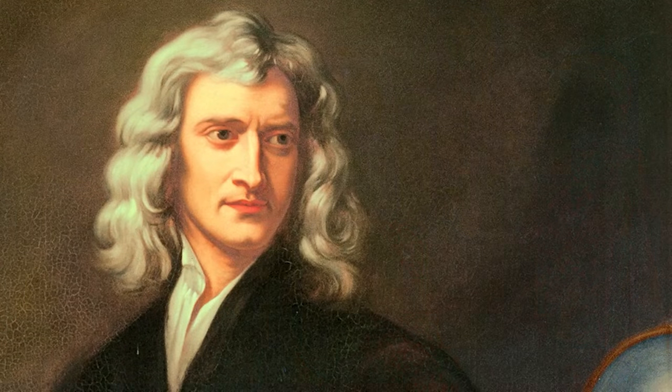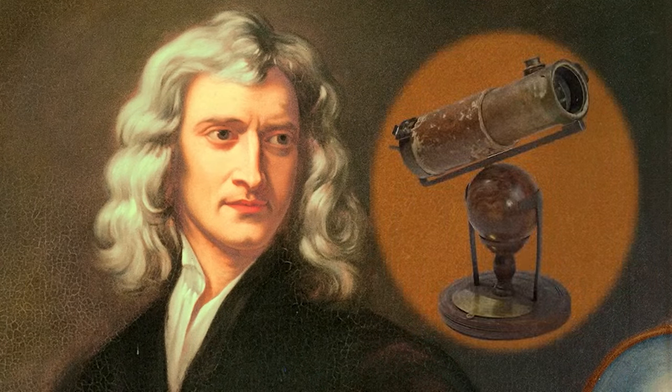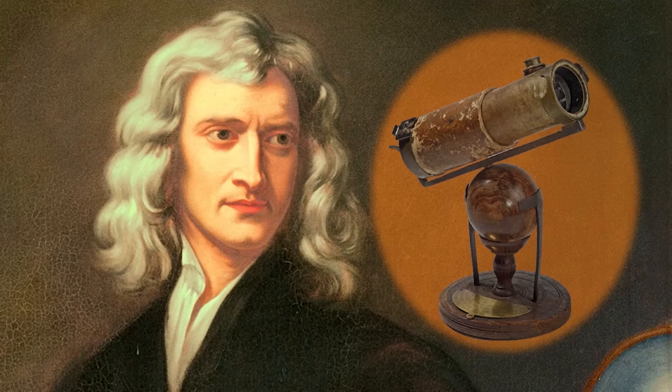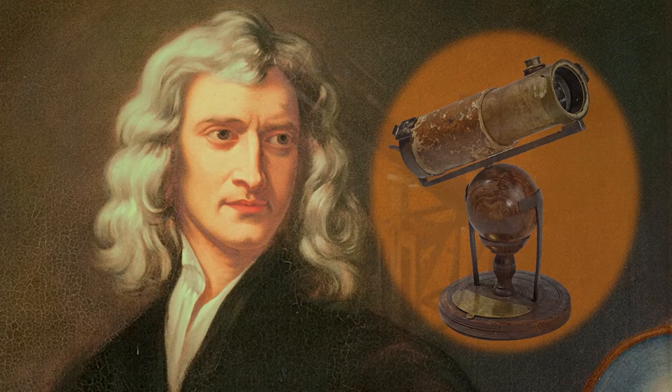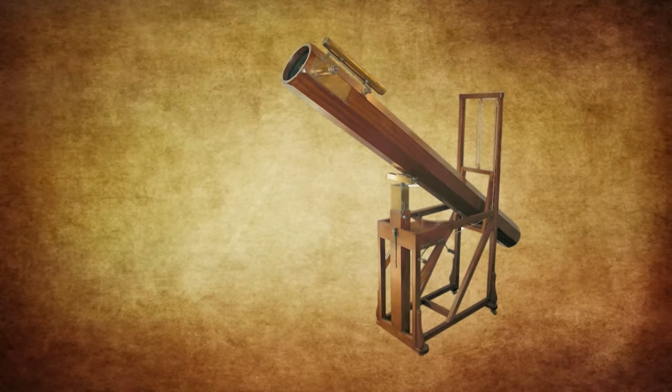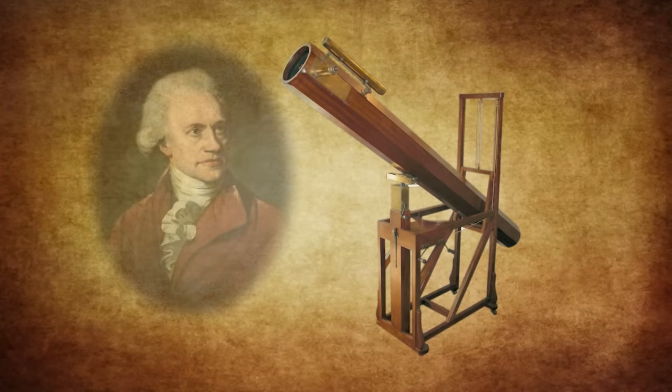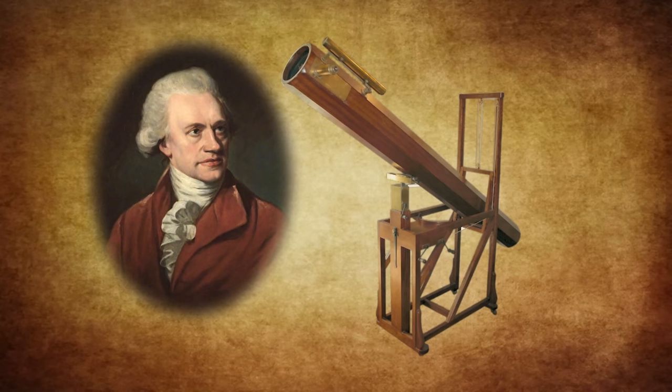In 1668 Newton invented the reflecting telescope to eliminate the problem of uneven refraction of the different wavelengths of light. The reflecting telescope became the design of choice for astronomers. And in 1781 William Herschel used an instrument he had built himself to discover the planet Uranus.